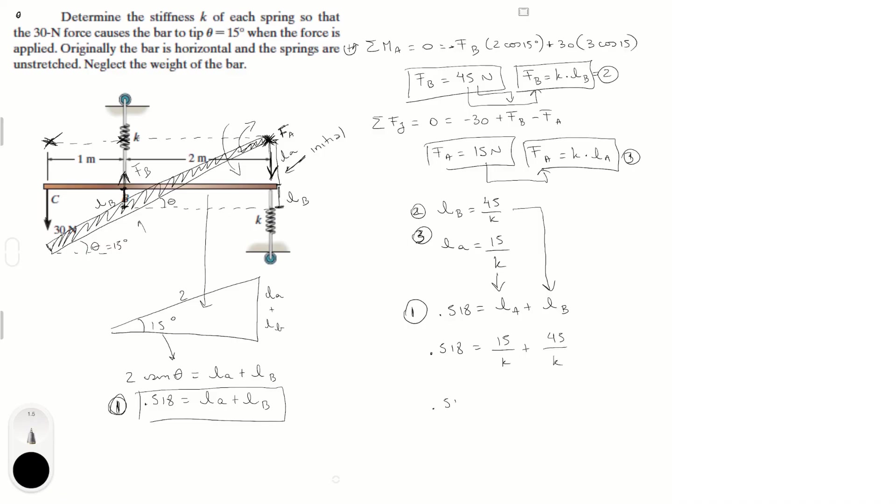0.518, K is equal to 60, K is equal to 60 over 0.518, K is equal to 115.83 Newtons per meter. This is the stiffness K to have a 15 degree with the horizontal formed. Final answer.